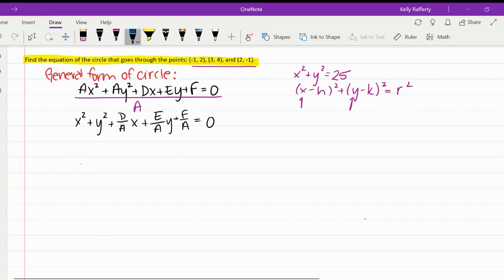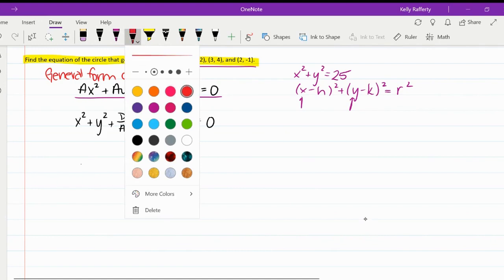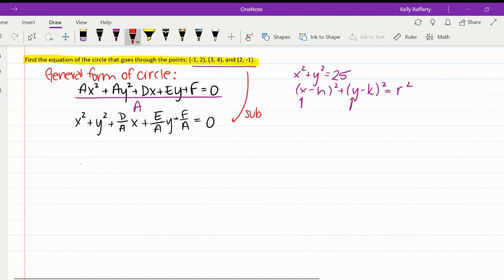So the first thing that we're going to do is we're going to sub these points for X and for Y. So I'm going to start off using the point negative 1, 2, and I'm going to sub them both into this equation. So I'll do negative 1 squared, 2 squared, and go all the way down the list. So this would be minus 1, negative 1 times D over a. This would be 2E over a. And then F over a is always just by itself. And I'm going to do the same thing with all these other points.